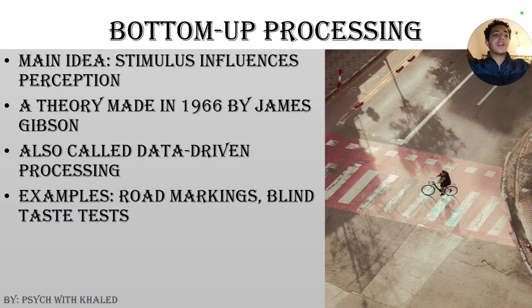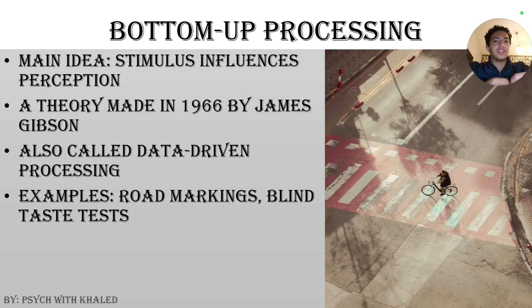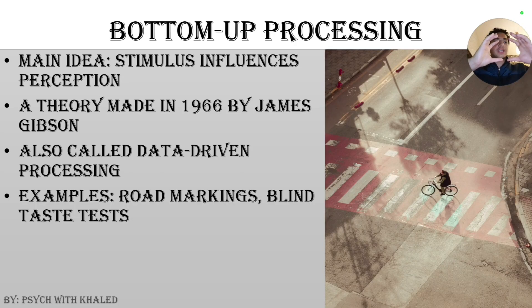Starting off with bottom-up processing. The main idea of bottom-up processing is that the stimulus influences the perception. We start off with no preconceived idea of what's being sensed, and then we allow the stimulus to influence the perception of what is being sensed. This theory was made in 1966 by a psychologist by the name of James Gibson, and it falls under the idea of reductionism, which is basically having a huge object and then breaking it down to smaller and smaller objects.